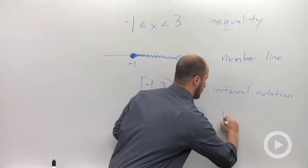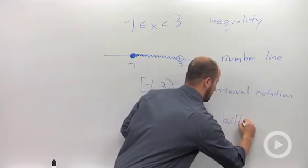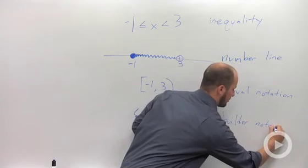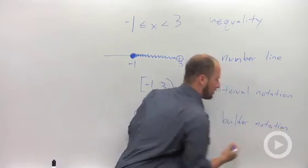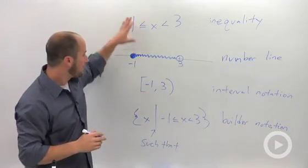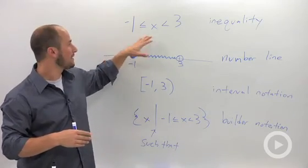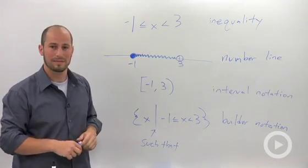And this is called builder notation. So four different ways of all writing the exact same thing. x is between negative 1 and 3, including negative 1.